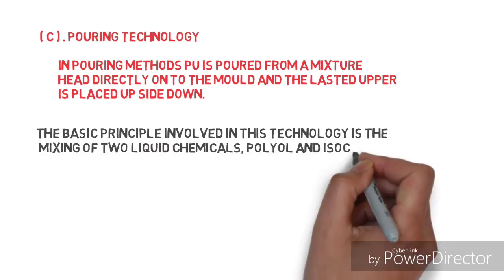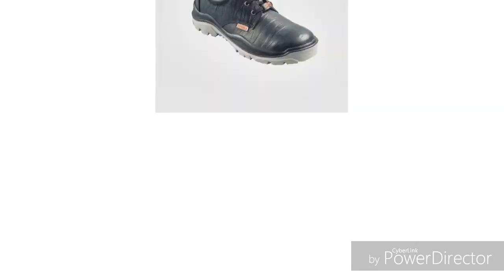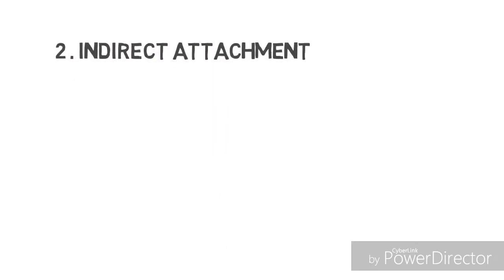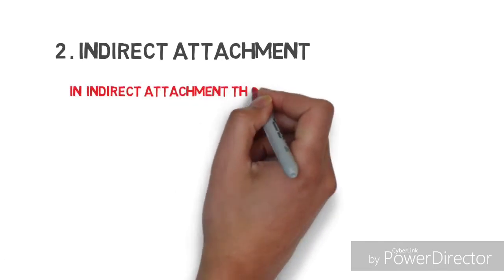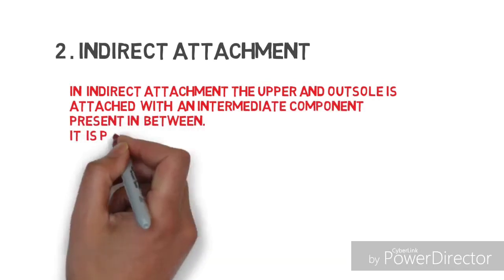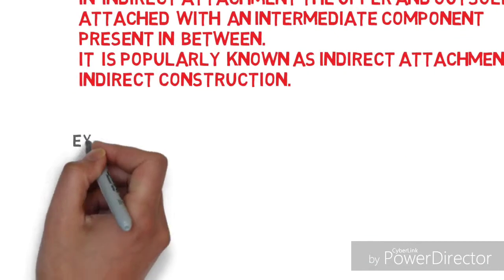Second one is indirect attachment. In indirect attachment, the upper and outsole are attached with an intermediate component present in between. It is popularly known as indirect attachment or indirect construction.